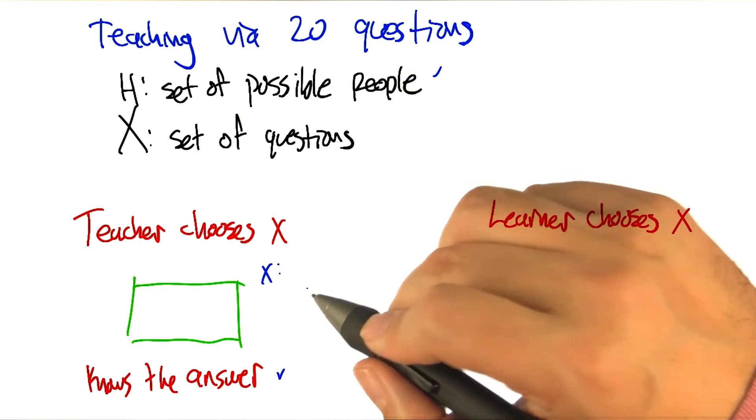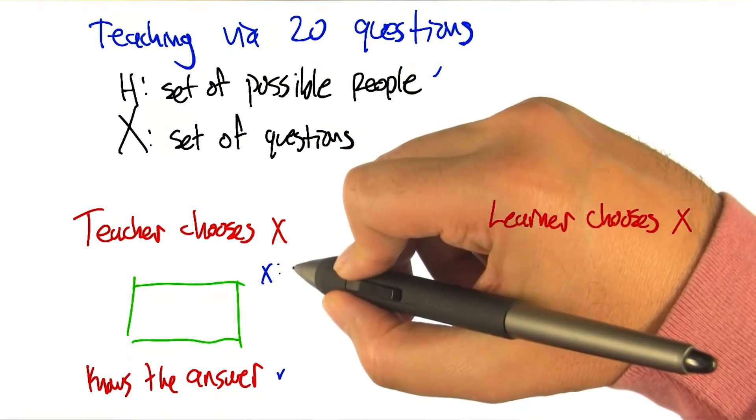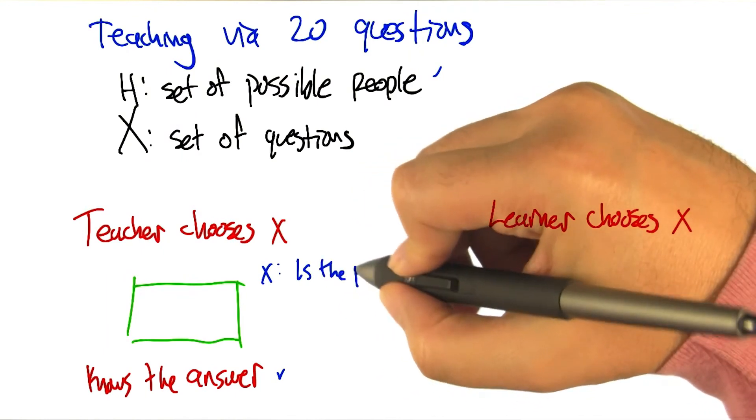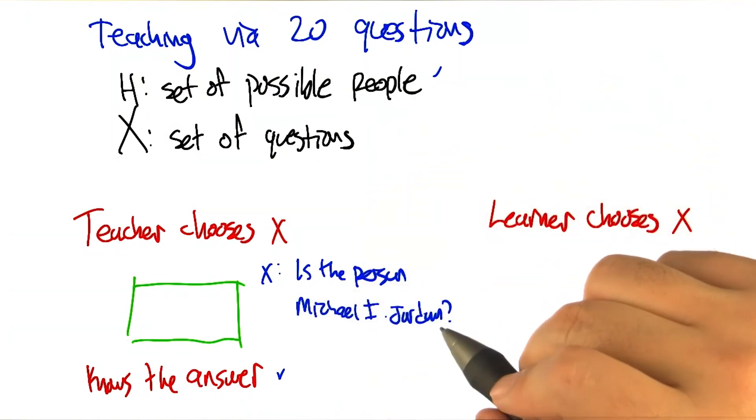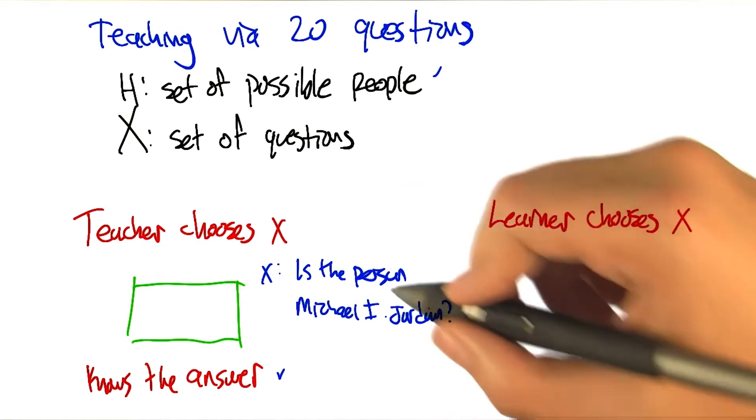All right, but you could have done this in one question, right? If you had to ask me, if the first question was, is the person, and then the actual person, you knew that the answer to that would be yes, and so I would have gotten it in one step.